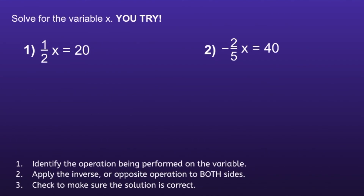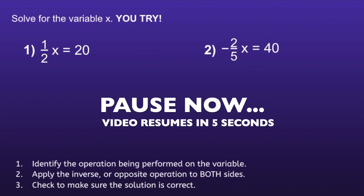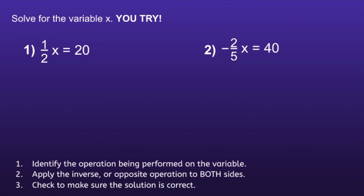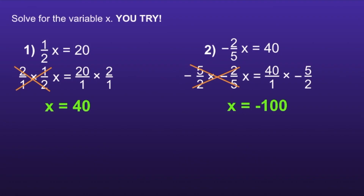Now there are two problems for you to try. Number 1: one-half x is equal to 20. Number 2: negative 2 fifths x is equal to 40. Pause the video, solve, then resume to check your solutions. The answers are: number 1, x equals 40; number 2, x equals negative 100. If you got either wrong, go back and find your mistake.